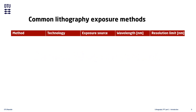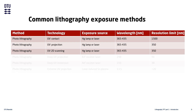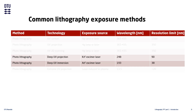In the semiconductor fabrication lab we can use different methods for transferring the mask pattern into the resist. The first method is photolithography, which uses photons as the exposure medium. Starting with the methods which have the largest wavelengths, we have ultraviolet lithography, with an exposure wavelength of 365 to 435 nanometers. Next is deep UV lithography, with a wavelength of 193 to 248 nanometers. Finally, extreme UV lithography operates at 13.5 nanometers.